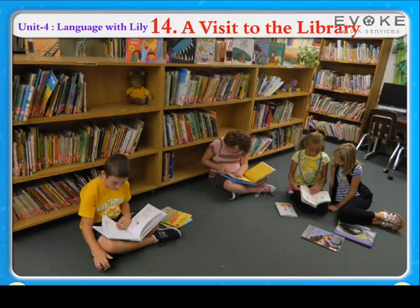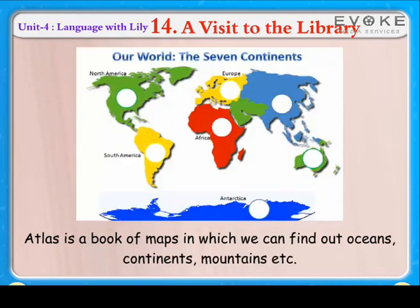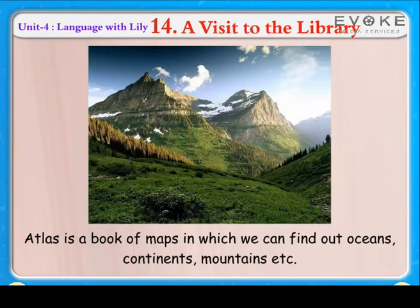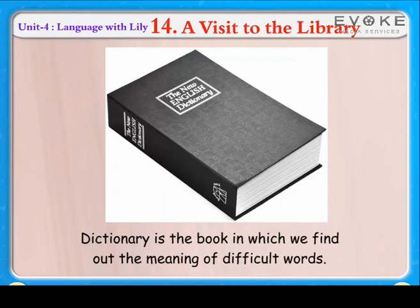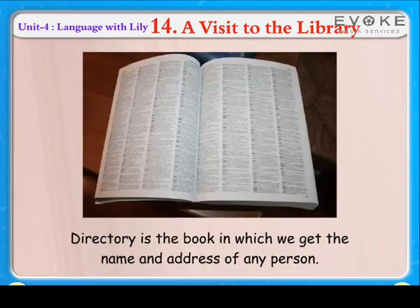A visit to the library. An atlas is a book of maps in which we can find out oceans, continents, mountains, etc. A dictionary is the book in which we find out the meaning of difficult words. An encyclopedia is the book in which information is given alphabetically.